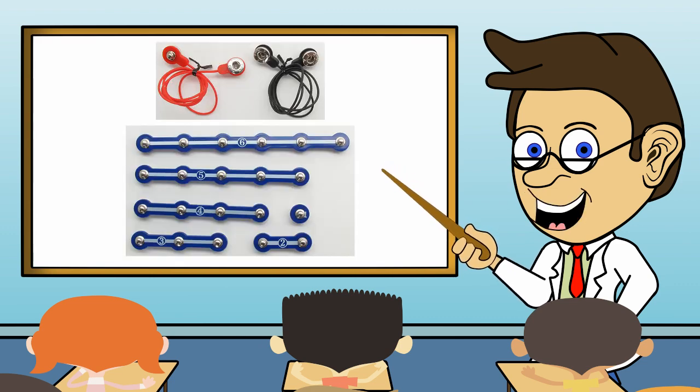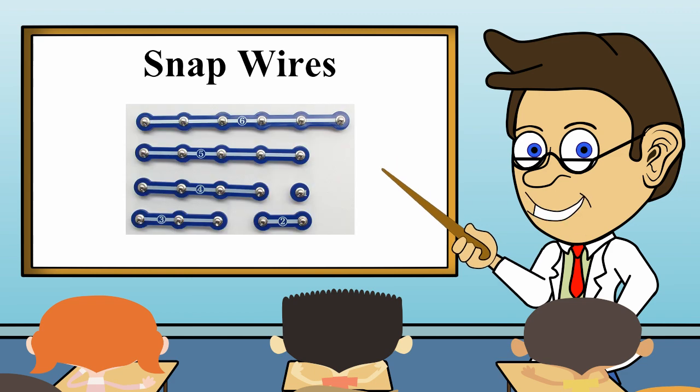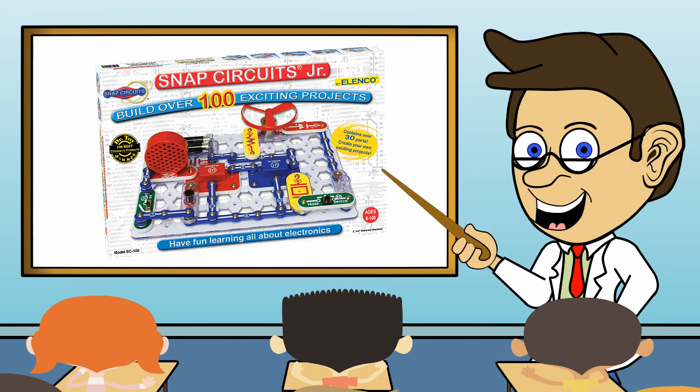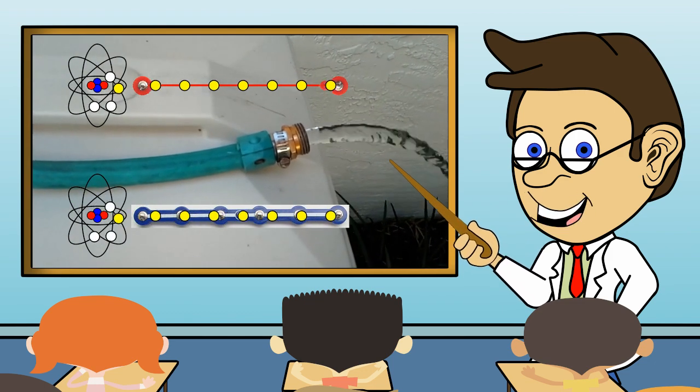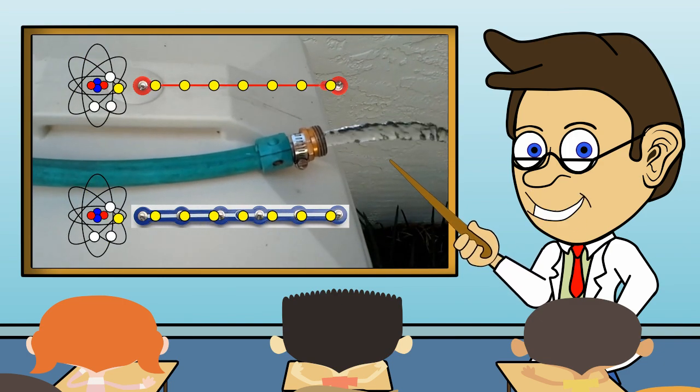But for now, here are the two most common examples of conductors we will be using. Number one is wires and number two is snap wires. Both are found in your snap circuits kit and both will let electricity flow along them as well as water flows through a hose.